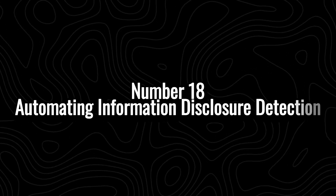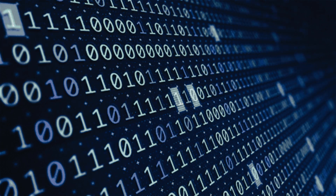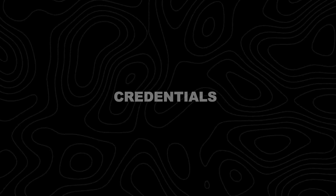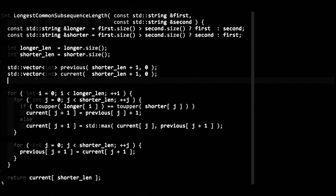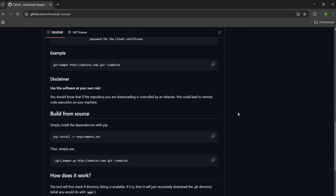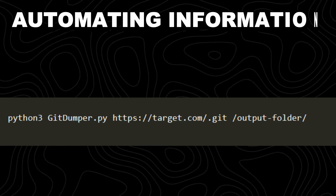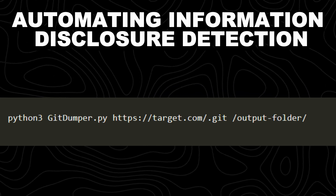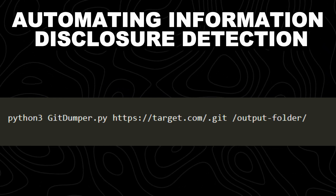Number 18: automating information disclosure detection. Information disclosure is a critical security issue where sensitive data such as source code, credentials, API keys, and internal configurations are unintentionally exposed. One common source of leaks is exposed .git repositories, which can reveal a website's entire codebase. Automating the detection of these leaks using Git tools can help quickly identify and retrieve sensitive information. This command automates the extraction of .git repositories from a website using GitDumper, a tool designed to recover exposed Git repository data.